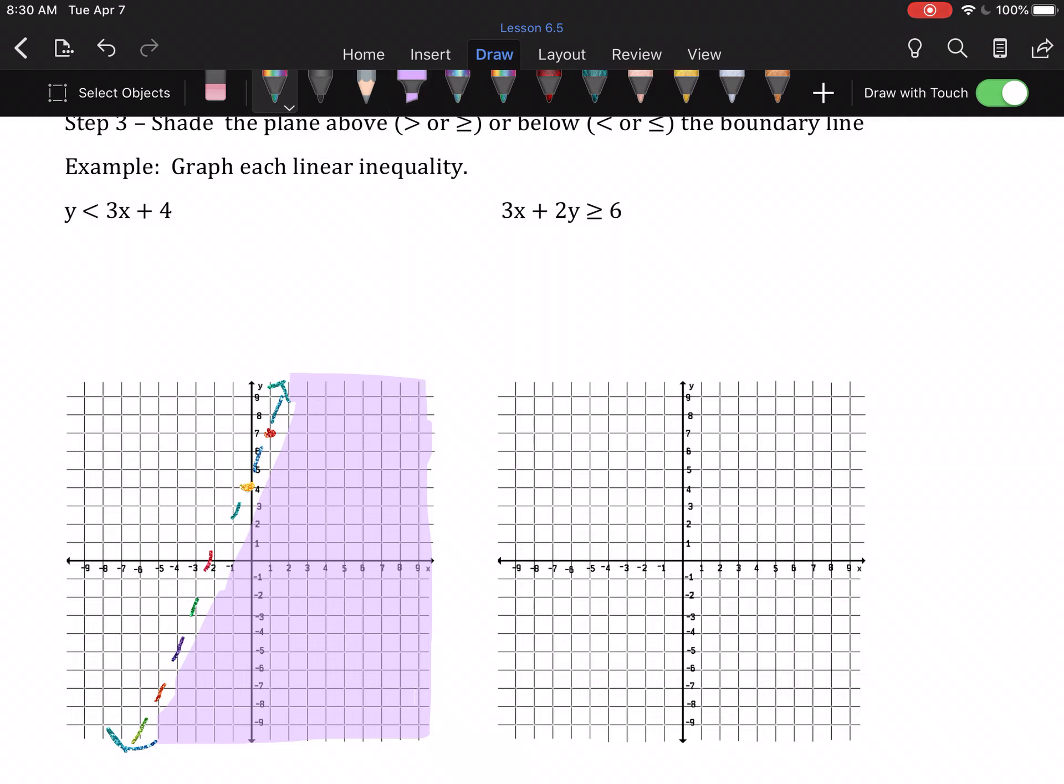For the last example, we actually have to do a little bit of math first, because this isn't slope-intercept form. So the first thing we need to do is subtract 3x from each side. That gets us 2y is greater than or equal to negative 3x plus 6. Remember, we're always going to slide the x term in front of the number term. And then we have to divide everything by 2. Everything. So that gets me y is greater than or equal to negative 3 halves x plus 3.